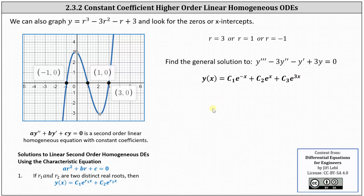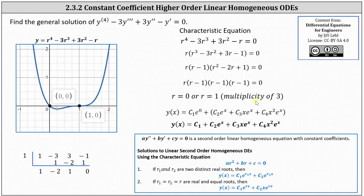Let's look at a second example. Let's find the general solution to the fourth order, constant coefficient, linear homogeneous differential equation. Going straight to the characteristic equation, we have r to the fourth minus three r cubed plus three r squared minus r equals zero. Notice how we have a common factor of r. Factoring out r gives us this equation. And then from here, we need to find one root for r cubed minus three r squared plus three r minus one, which we can do by analyzing the graph on the left.